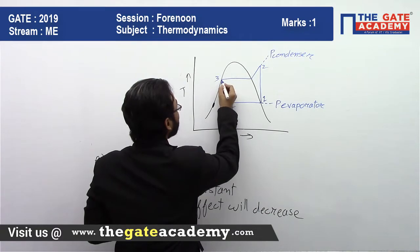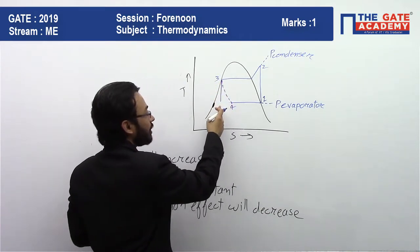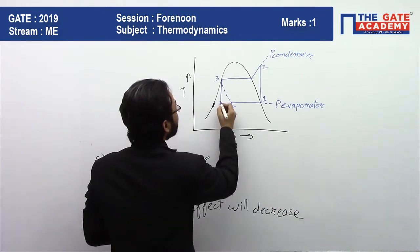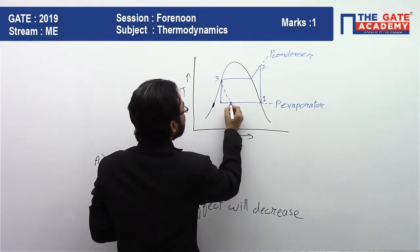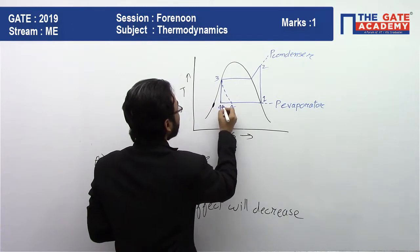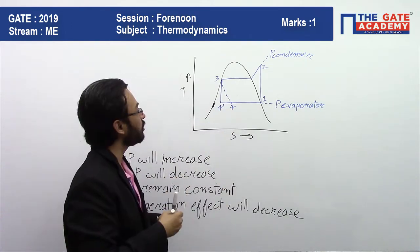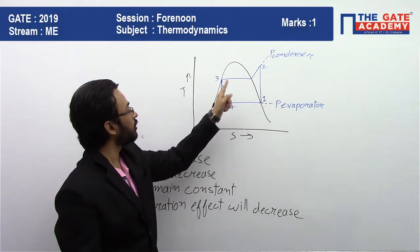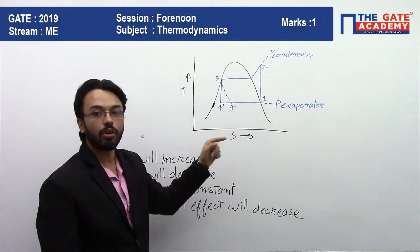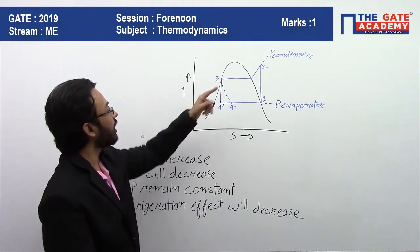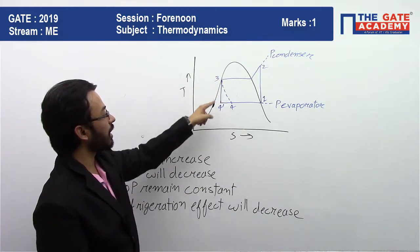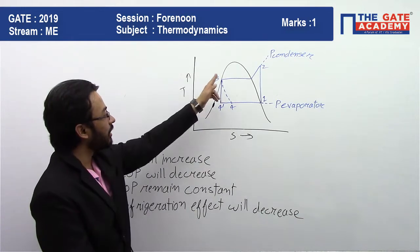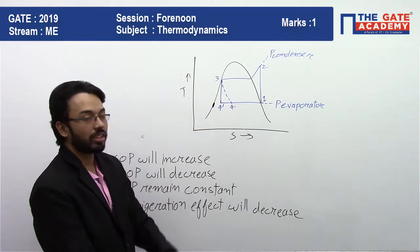If you are going to do it adiabatically, then first of all it is reversible adiabatic, so we will represent it with a straight line on the T-S diagram. Now you see, our new cycle is 1, 2, 3, and 4 dash. Our old cycle was 1, 2, 3, 4, where 3 to 4 we were expanding by throttling. And now we are expanding 3 to 4 dash by reversible adiabatic process.